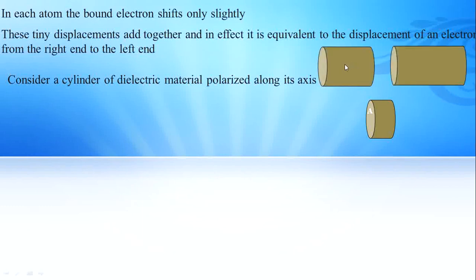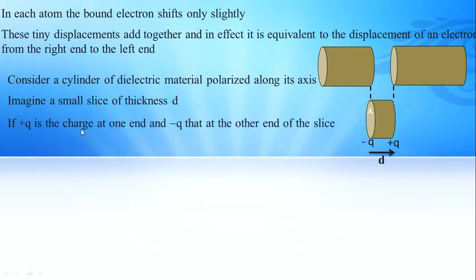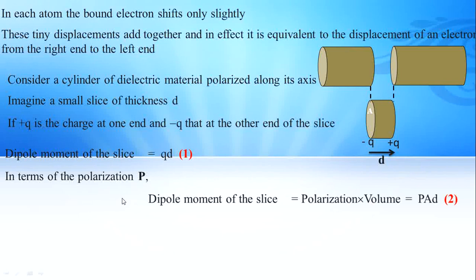I will show you a cylinder once again. Here is a dielectric material polarized along the axis. Imagine a small slice of thickness d and area A. The slice automatically has minus q charge and plus q charge residing on both surfaces — this is a dipole moment. If plus q is the charge at one end and minus q at the other end of the slice, the dipole moment equals charge times distance, that is q times d. In terms of polarization, dipole moment equals polarization times volume, where volume is area times distance, A times d.